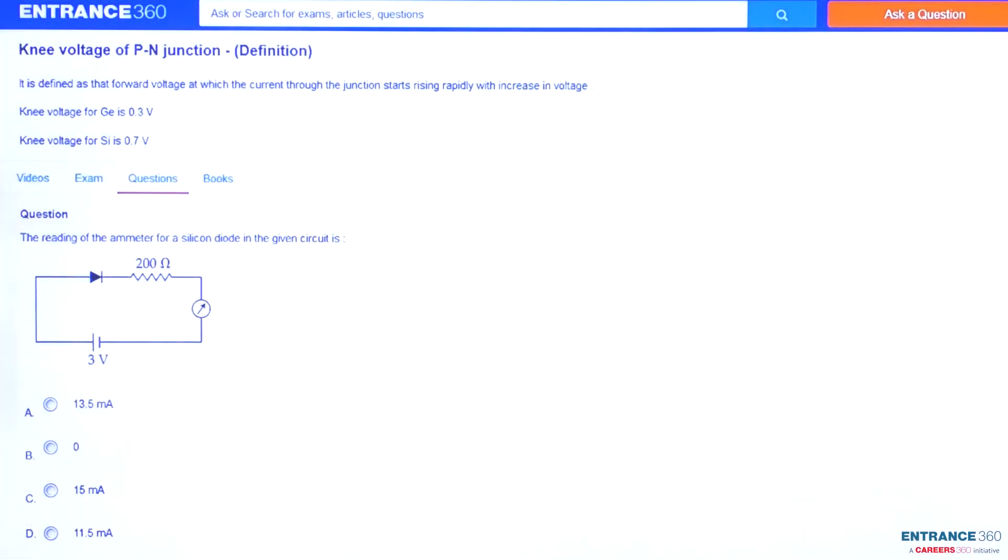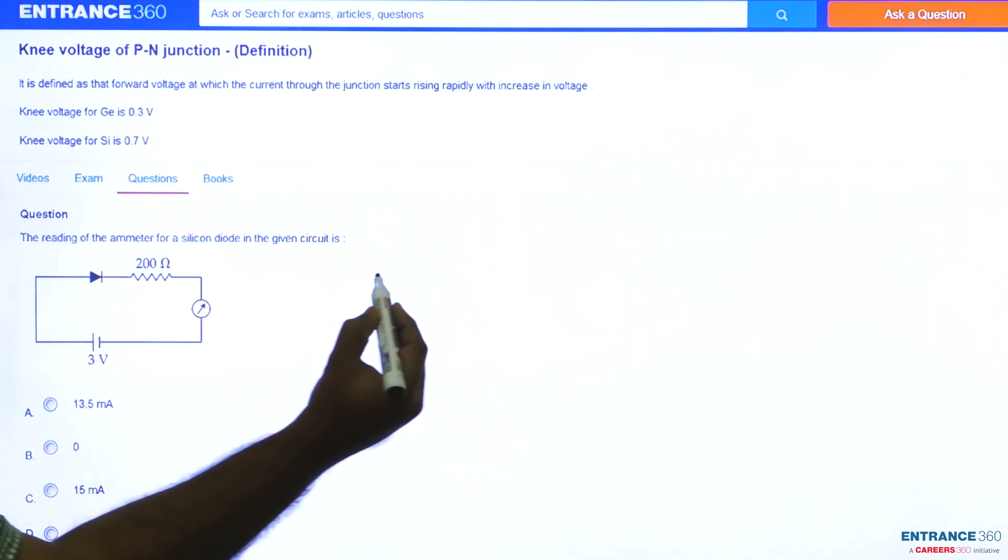Hello everyone, this question is from JEE Main 2018 from the chapter Electronic Devices. We have to find out the reading of the ammeter if the given diode is silicon.